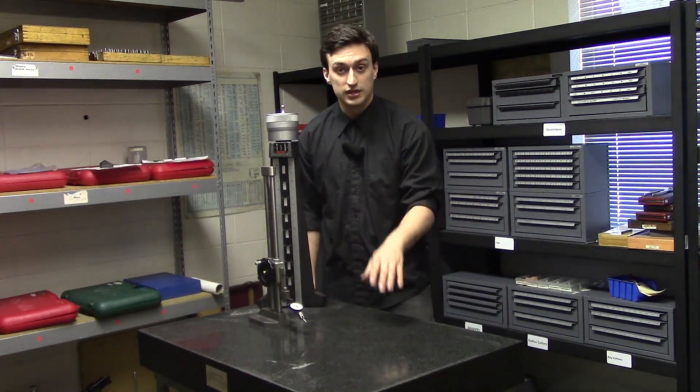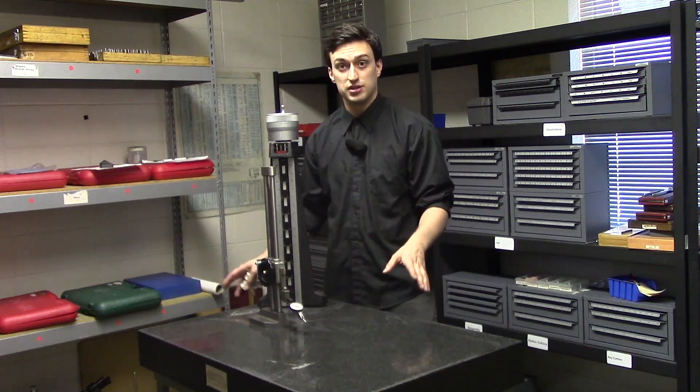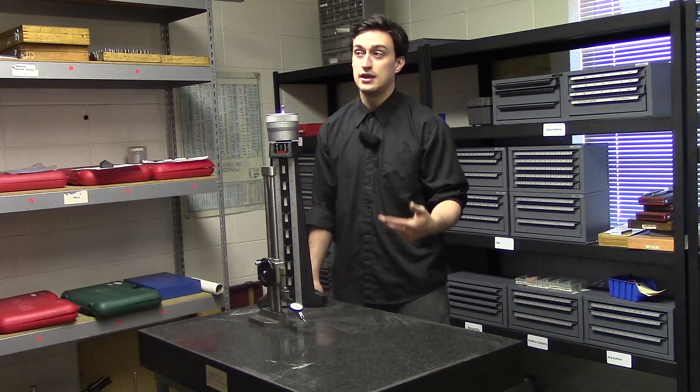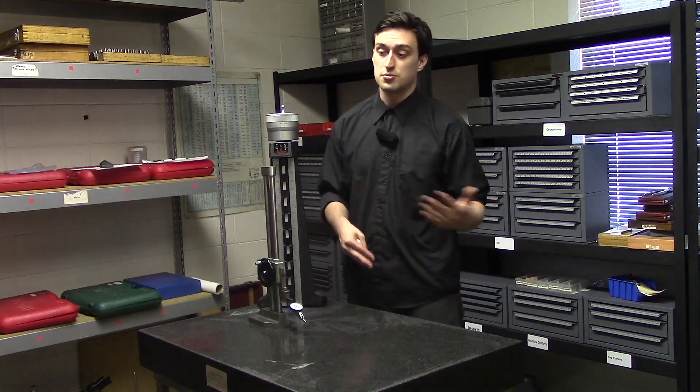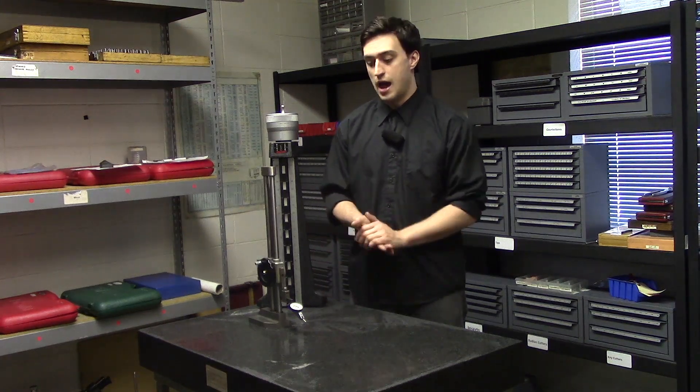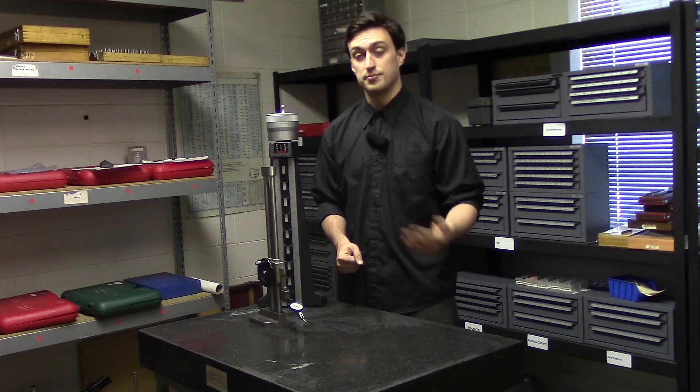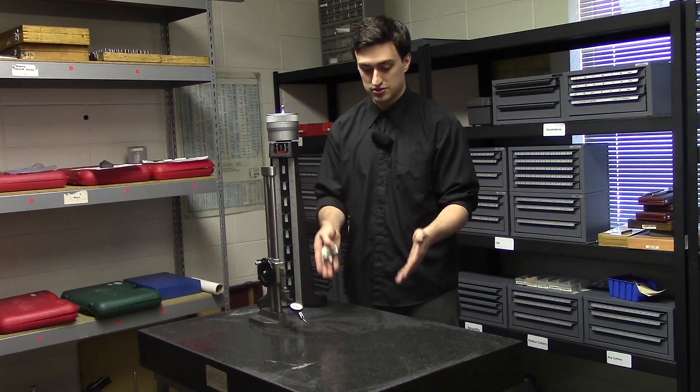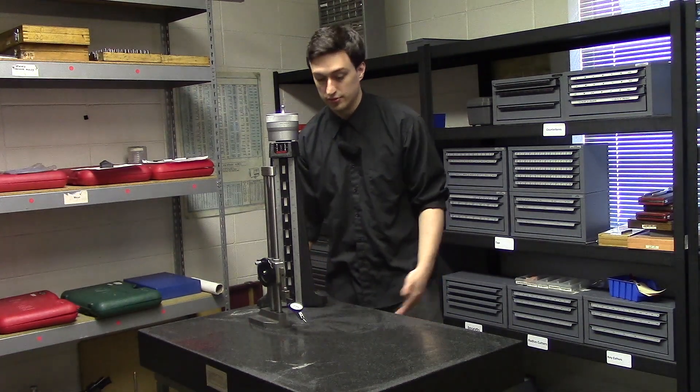So step one get clean. Step two make sure everything else that you're going to be using is clean. You want an indicator, indicator base, a ground pin. And you want to get your calipers or mics to check the dimensions. I'm not going to be doing that because I don't know what dimensions you're going to be checking. But you want to make sure to check those. Other than that let's go ahead and jump in this and move to the next step.